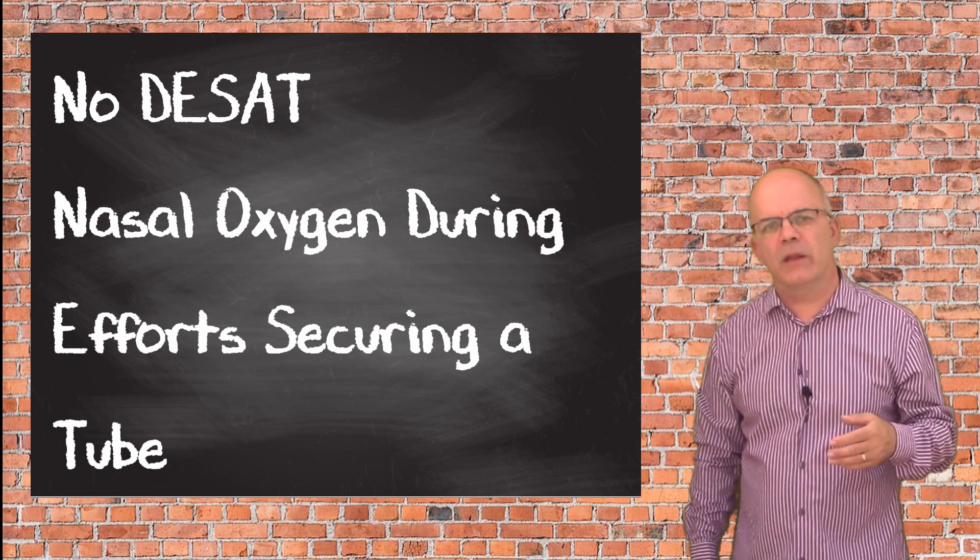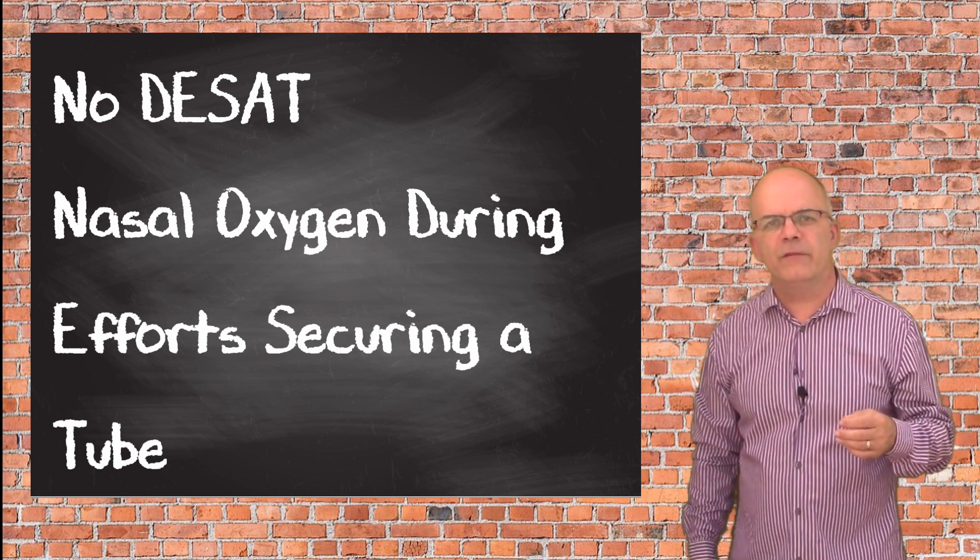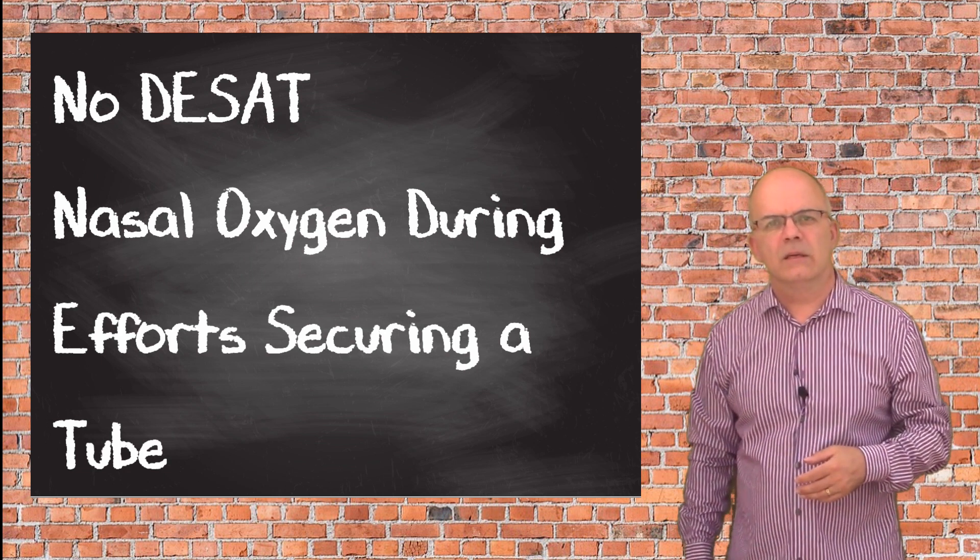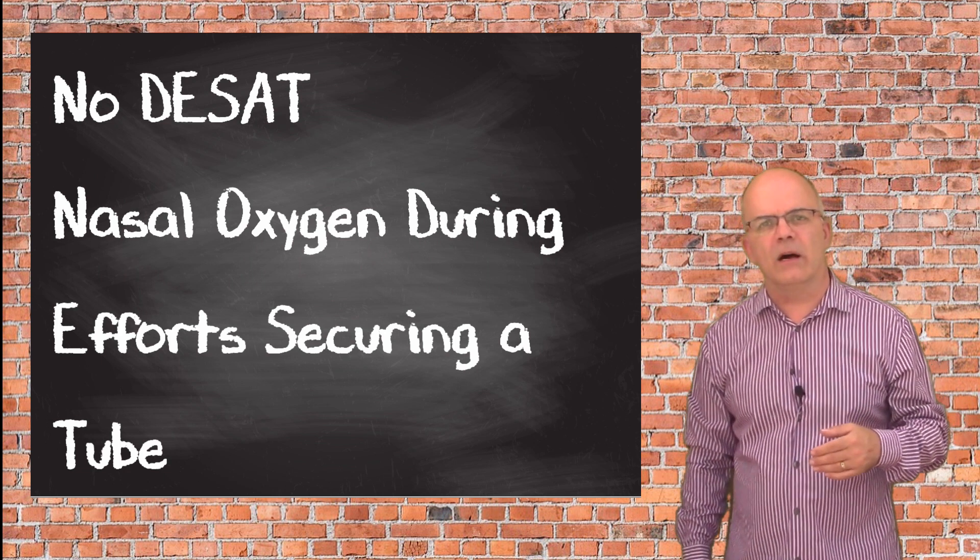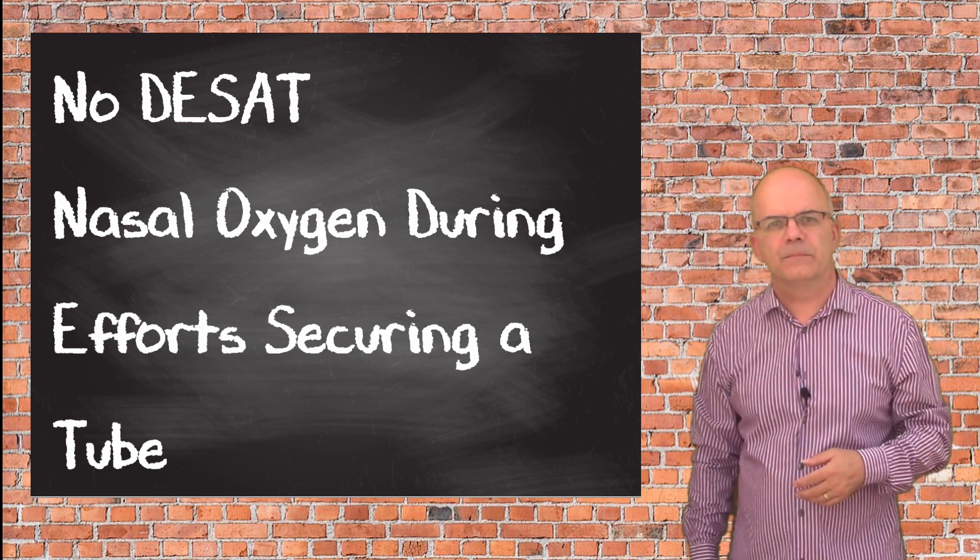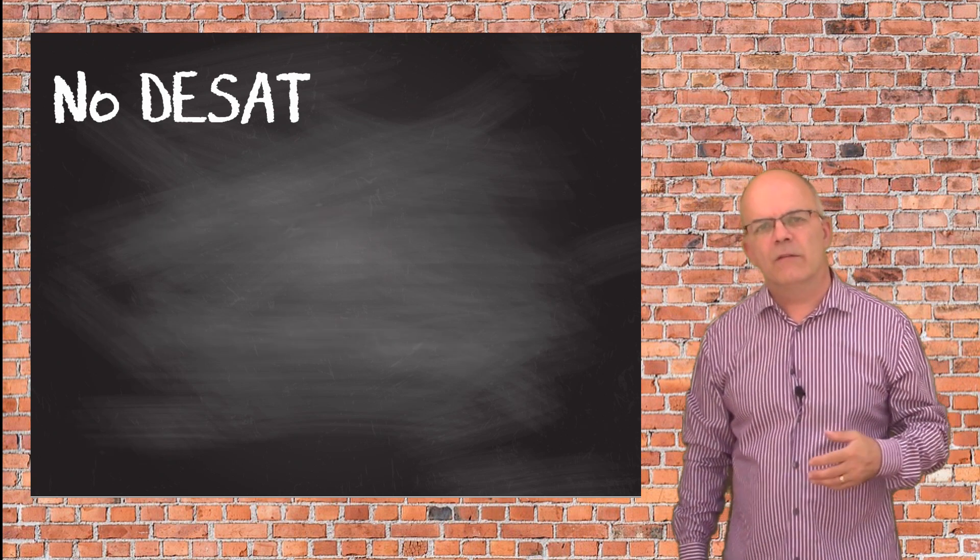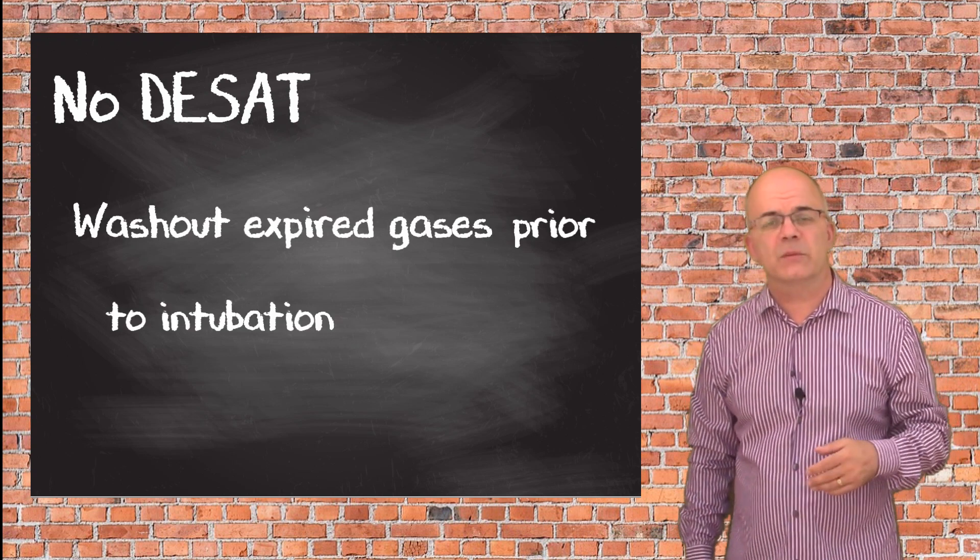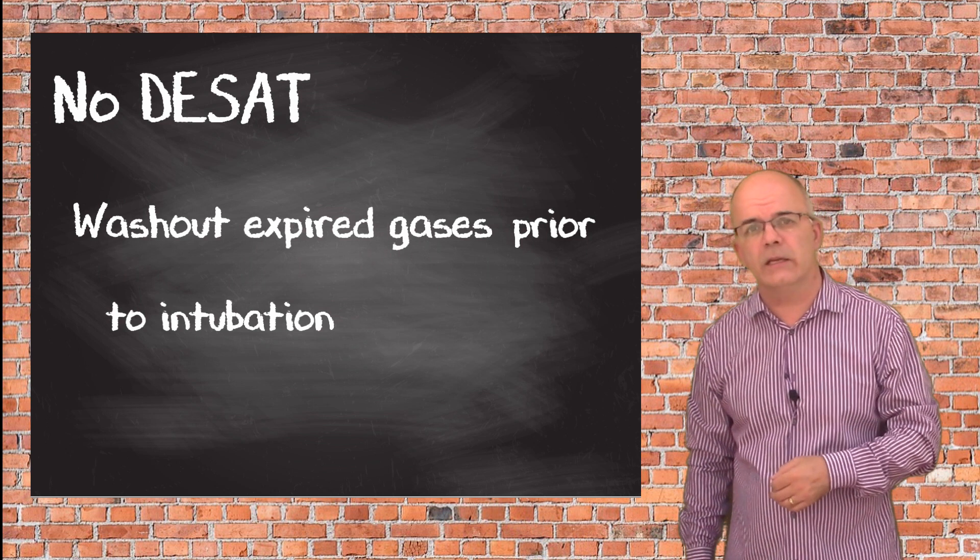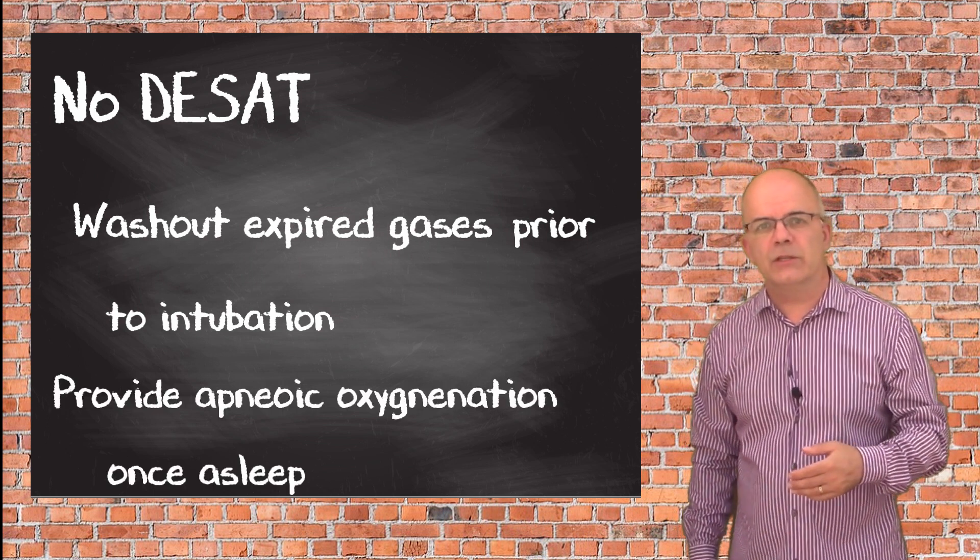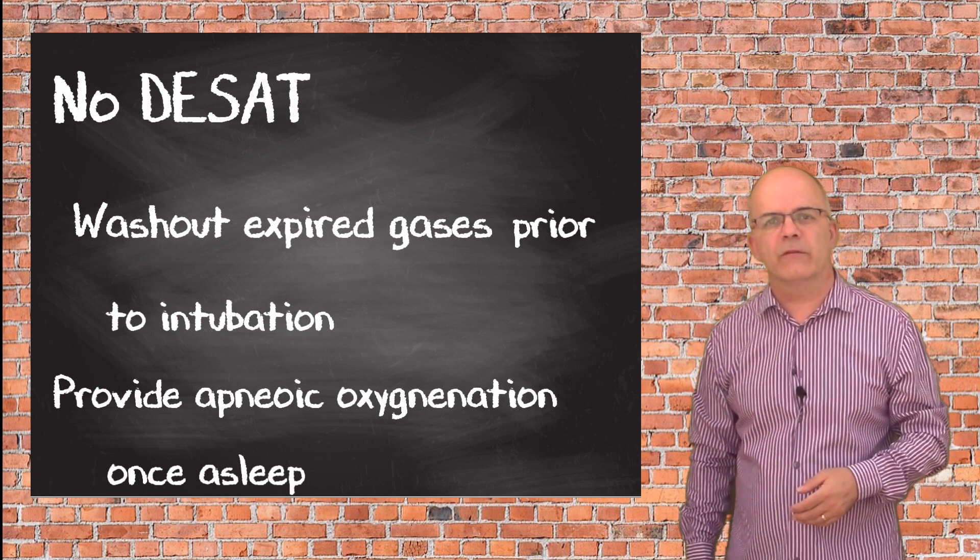It is beneficial then to apply nasal cannula running at 15 litres a minute to the patient, as well as the face mask. Whilst this flow rate does seem high, it has been shown that patients can tolerate this for a time. This will serve two functions. Firstly, it will wash out the expired gases that accumulate in the nasopharynx prior to intubation, and secondly, then provide some apneic oxygenation once the patient is sedated and no longer breathing for themselves.